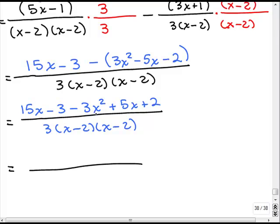I have a negative 3x squared, I have a 15x plus 5x. So, that's going to be plus 20x and then, I've got a negative 3 and a plus 2, that's a minus 1. And, on the bottom, I have 3 times x minus 2 times x minus 2.